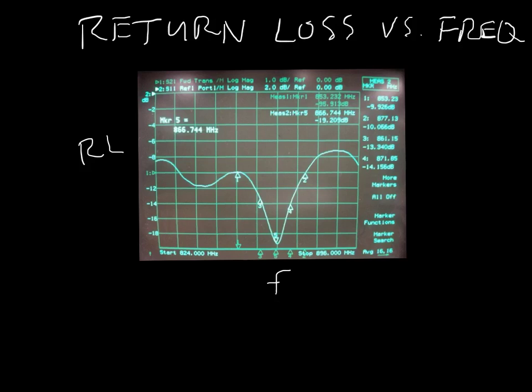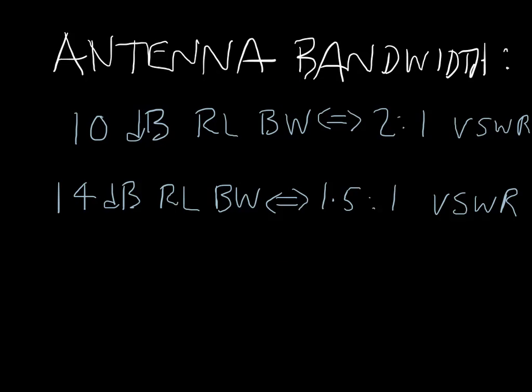And if you look where 14 dB return loss is, that would be your VSWR 1.5 to 1 in between these two. So a 10 dB return loss corresponds to a 2 to 1 VSWR, and a 14 dB return loss corresponds to a 1.5 to 1 VSWR. And we proved that a little while back there.